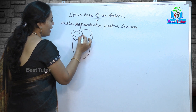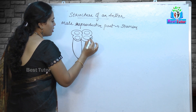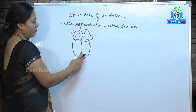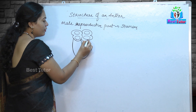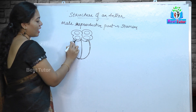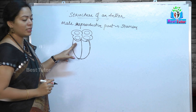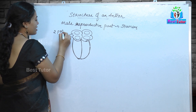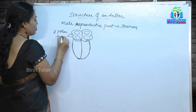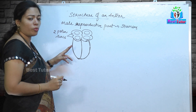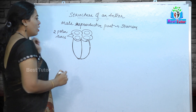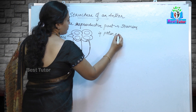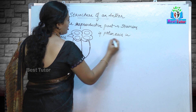Each lobe of the anther has two sacks. This is one lobe of the anther and this is the other lobe of the anther. Each lobe has two sacks, which we call pollen sacks. So there are two pollen sacks in each lobe, giving us overall four pollen sacks in each anther.